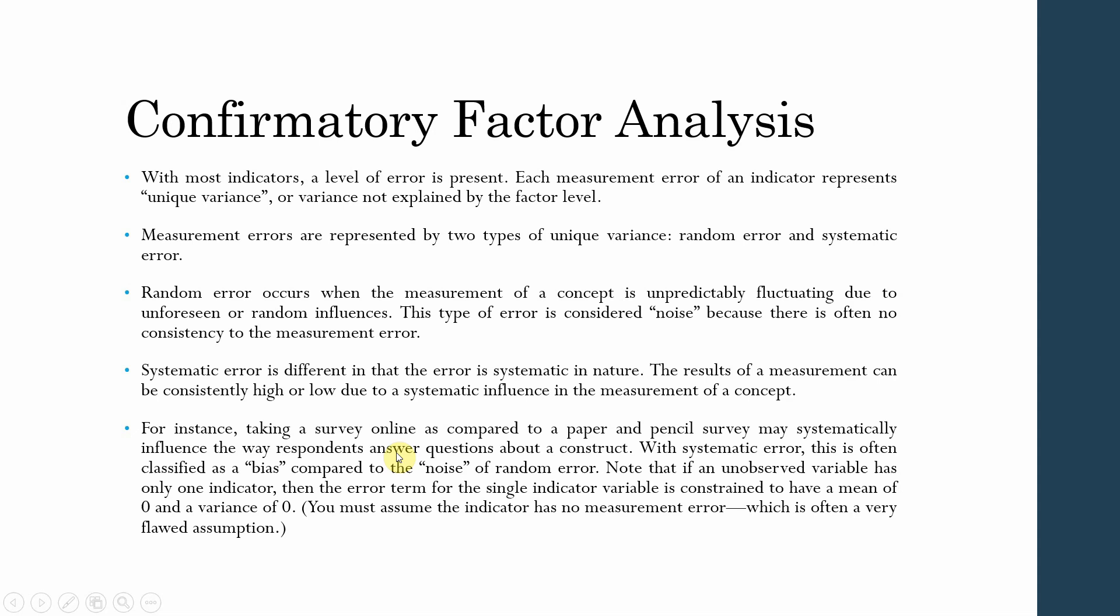With systematic error, this is often classified as bias compared to noise of random error—something that is not in your control and something that you can control.